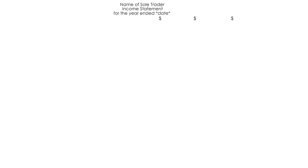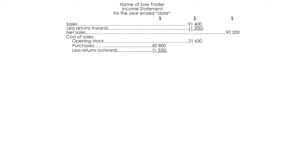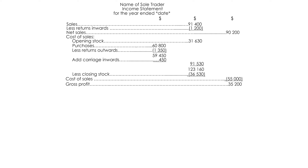Draw up the income statement. Name of sole trader, income statement for the year ended [date]. Dollar signs. Sales, less returns inwards, equals net sales. Cost of sales: opening stock, plus purchases, less returns outwards, add carriage inwards, less closing stock, equals cost of sales. Gross profit.